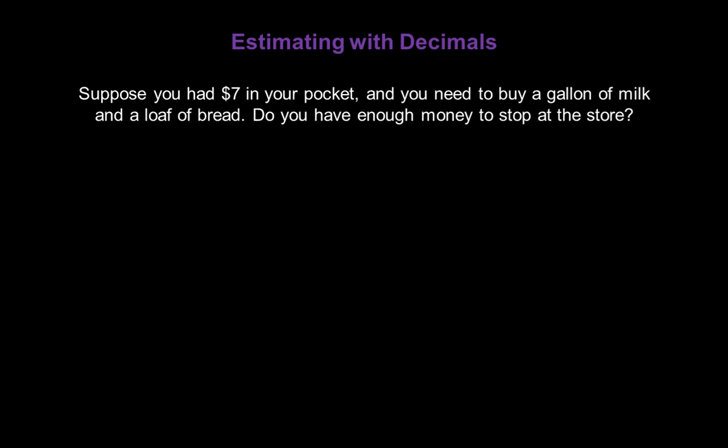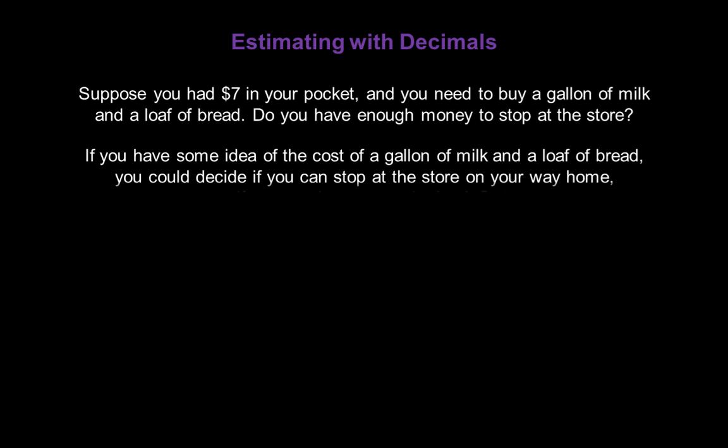Here's an example. Suppose you had $7 in your pocket, and you need to buy a gallon of milk and a loaf of bread. Do you have enough money to stop at the store? Well, if you have some idea of the cost of a gallon of milk and a loaf of bread, you could decide if you can stop at the store on your way home, or if you need to stop at the bank first.